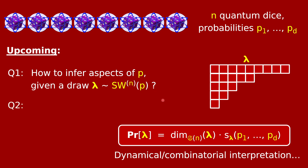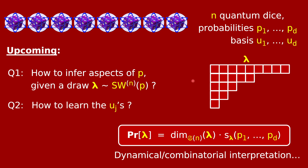The key to unlocking this complicated formula is a completely different interpretation of this probability distribution — a combinatorial, dynamical process involving only combinatorics and probability, no representation theory, that also produces a random Young diagram with exactly this Schur-Weyl distribution. Finally, also coming up: what if we want to learn the entire quantum state — both the p's and the U's? That involves a little more representation theory, but we'll get to it towards the end of this video series.